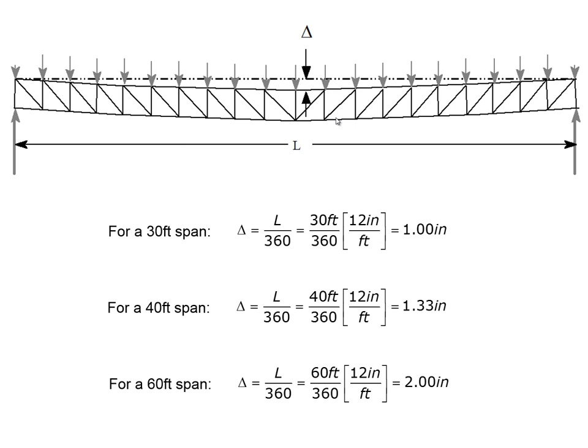We account for deflection in these trusses. Our standard deflection condition is that deflection should not exceed L over 360. For a 30-foot span that's a 1-inch deflection, for a 40-foot span it's 1.33 inches, and for a 60-foot span it's a 2-inch deflection.